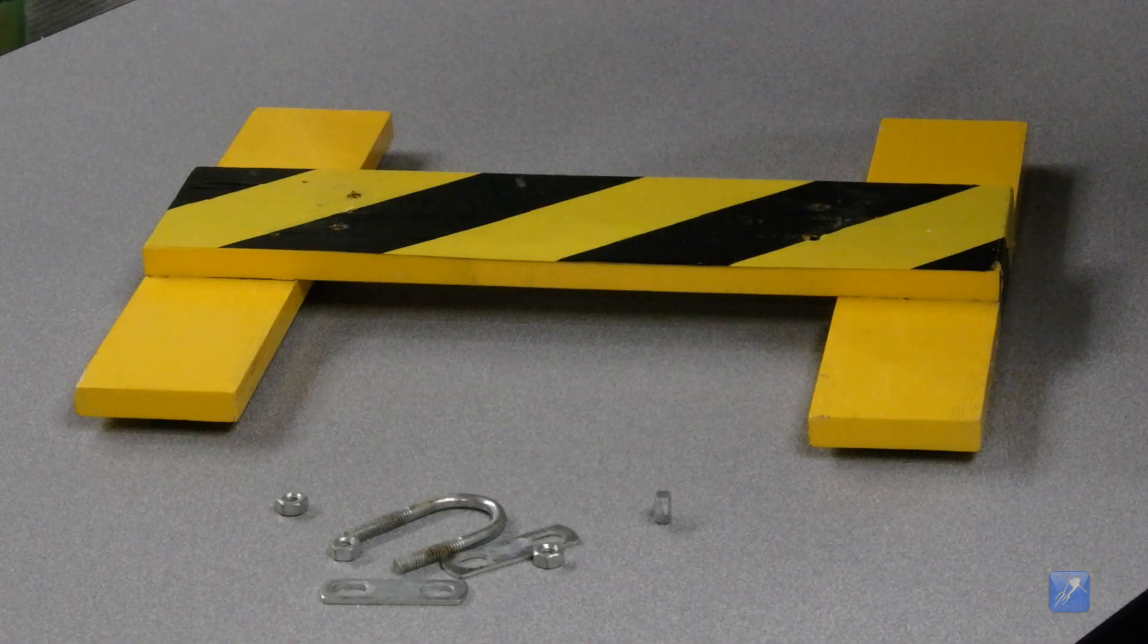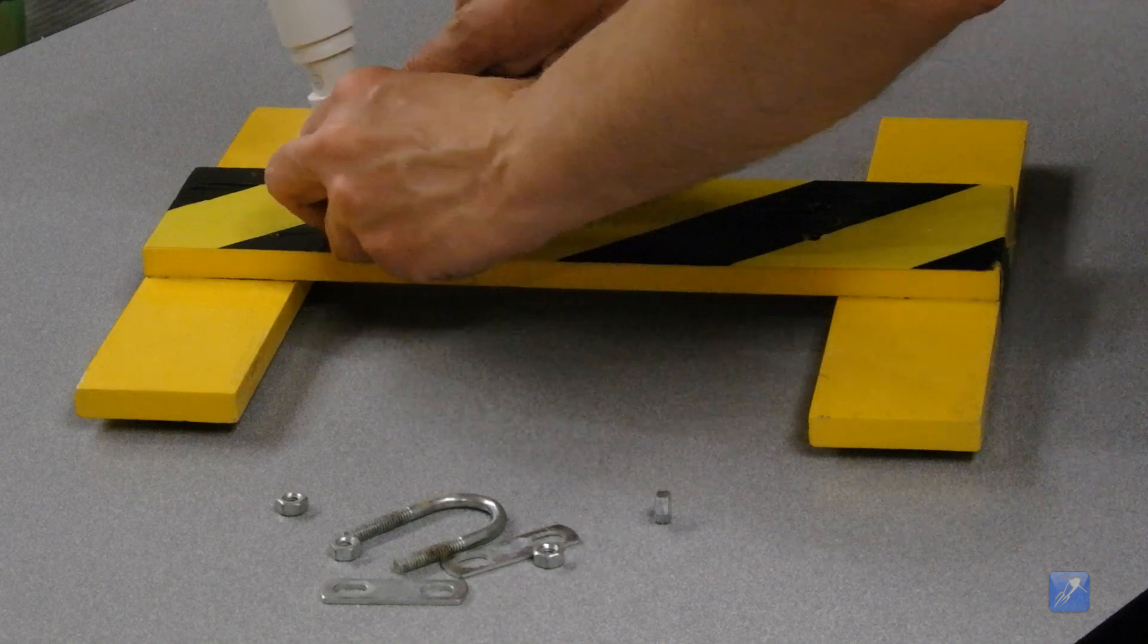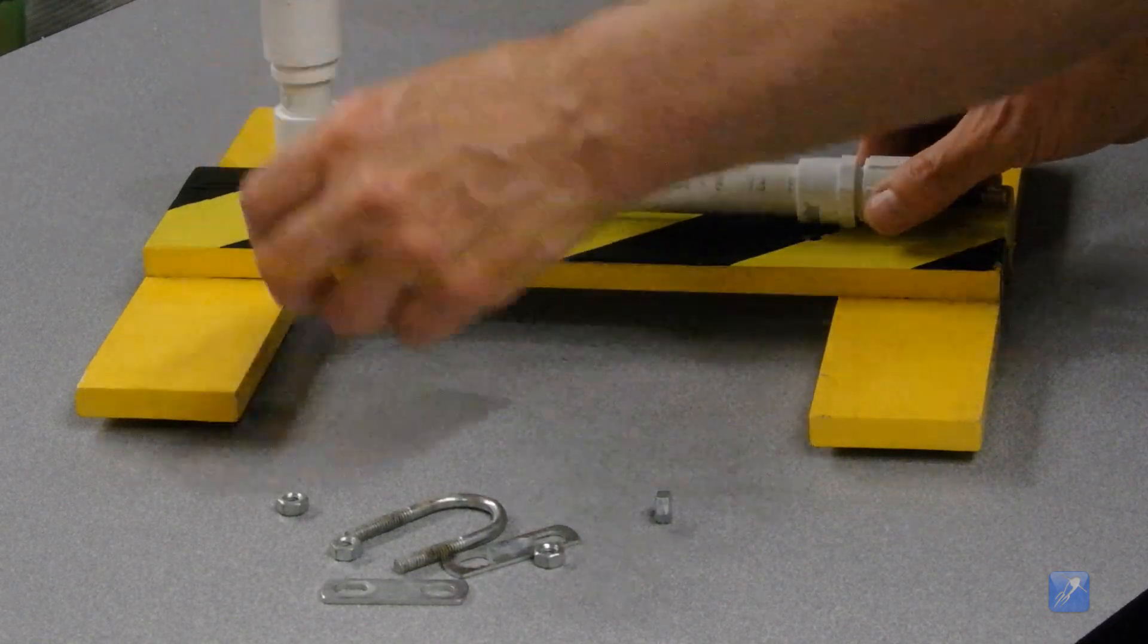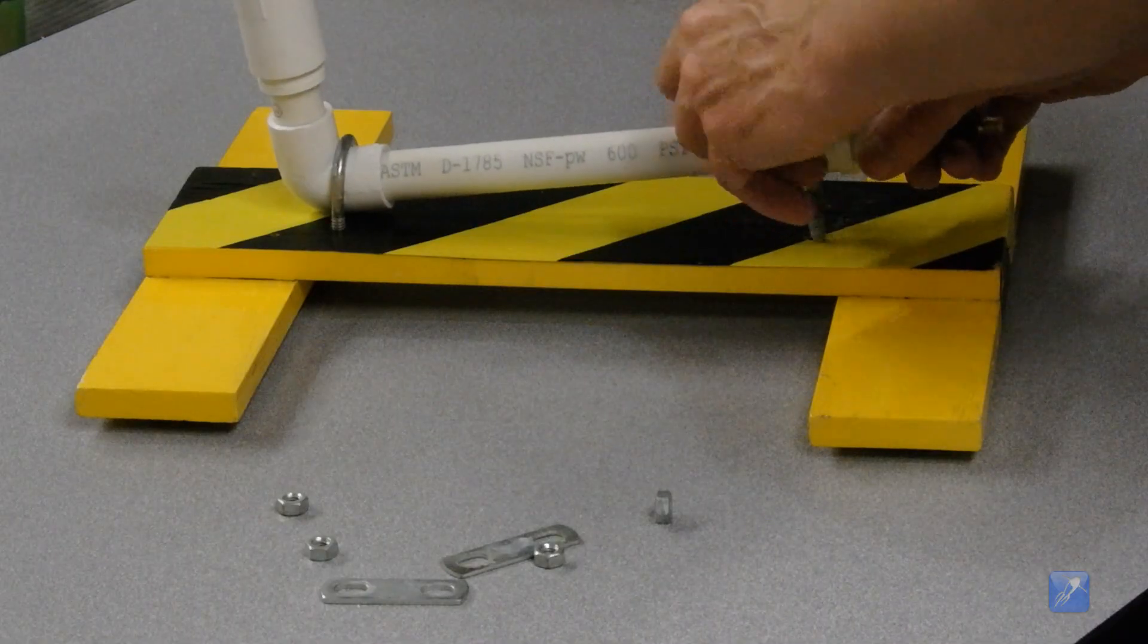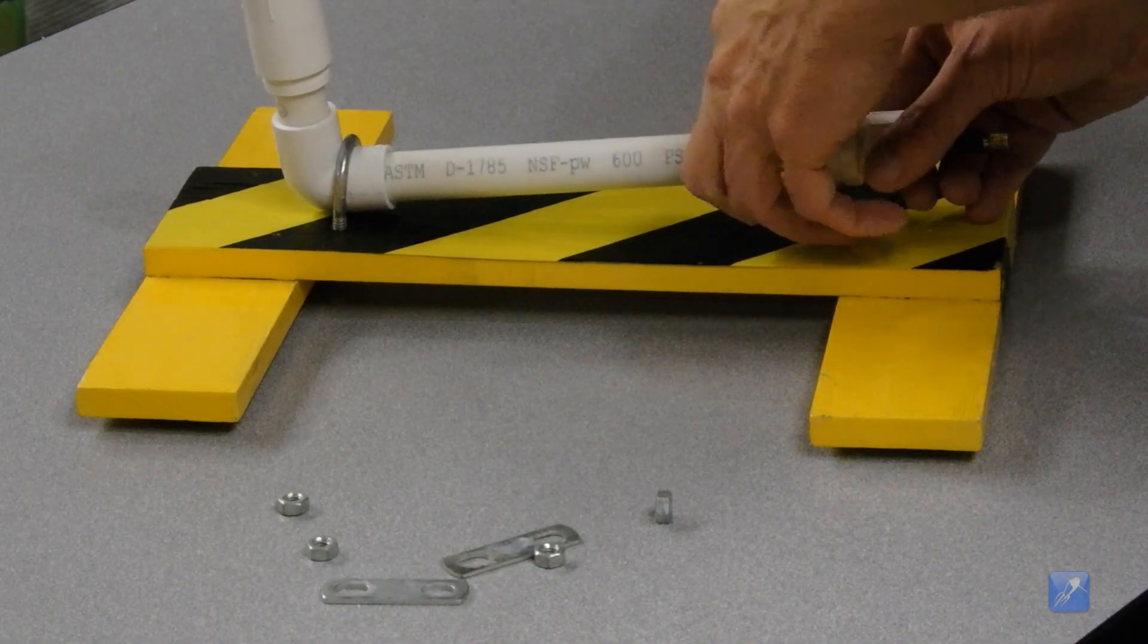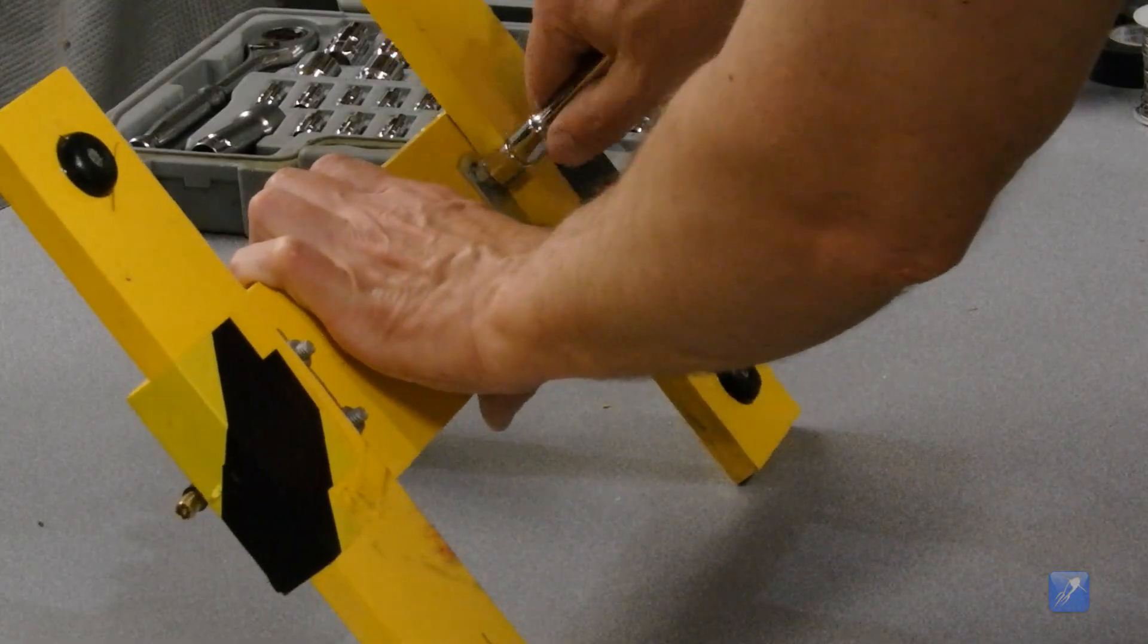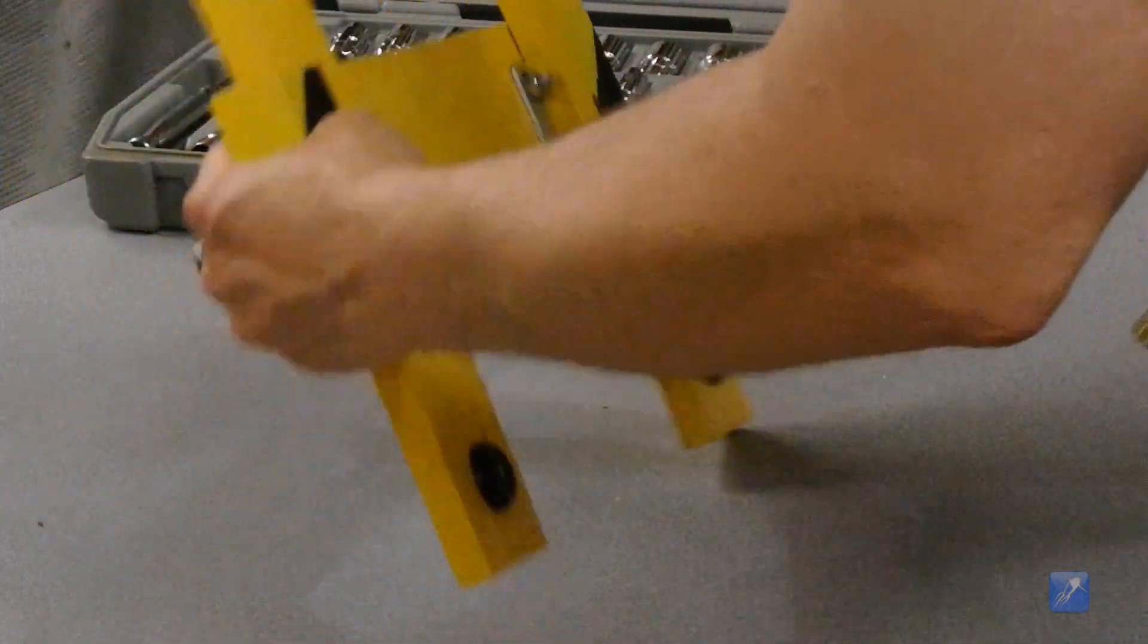Here we have a nicely painted launcher base, which we built some time ago for our Clark Cable Tie launcher tutorial. If you want to make a base like this, you can follow the link in the description for that project. When the launcher is mounted into the base, be careful not to over-tighten the U-bolts, which can cause the PVC pipe to crack.